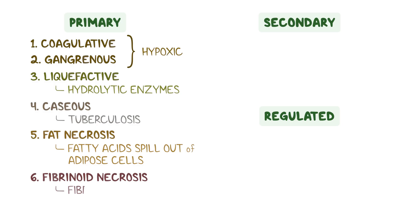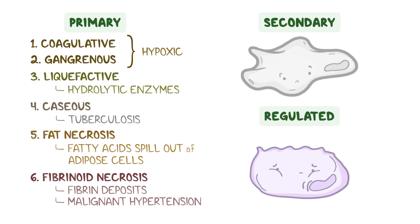Fibrinoid necrosis is caused by fibrin deposits, like in malignant hypertension. On the flip side, secondary necrosis occurs when there are no phagocytes to clean up the mess of an apoptotic cell, while regulated necrosis refers to a genetically controlled cell death characterized by cellular swelling and leakage of intracellular components.